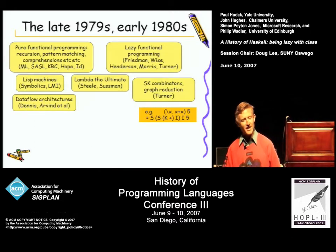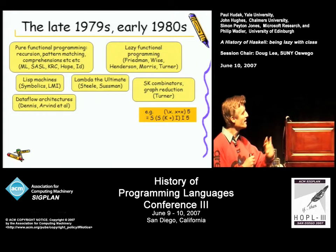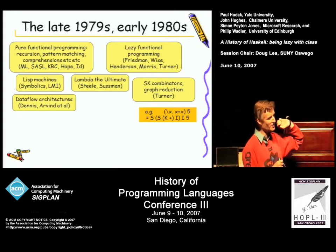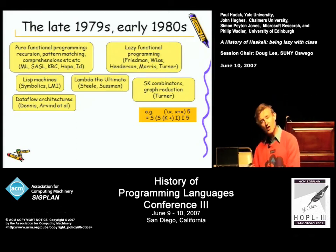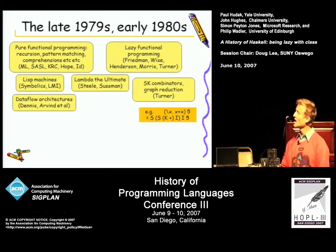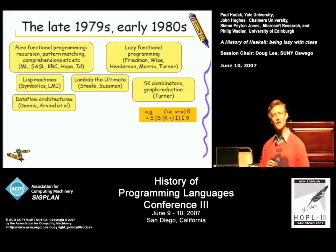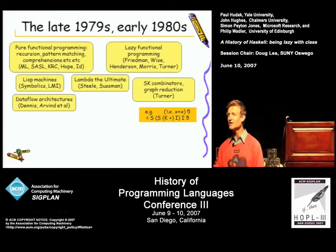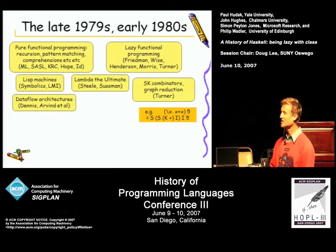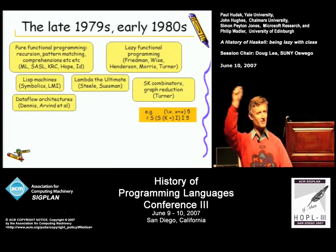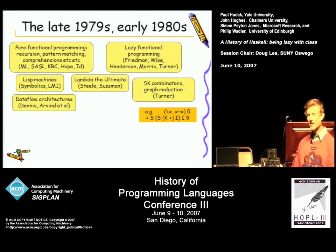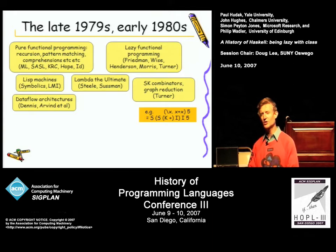At the same time, stuff was happening on the computer architecture side. Lisp machines were coming out built by Symbolics and LMI, exploiting the language they were executing with hardware acceleration. There was lots of work on dataflow architectures, both at MIT and other places like Utah, and also in Britain where John Gurd and his team at Manchester built the Manchester dataflow machine. They were building machines which executed functional programs directly.